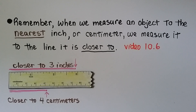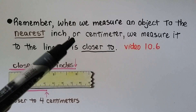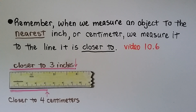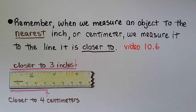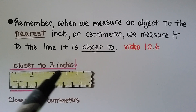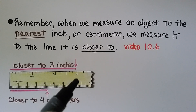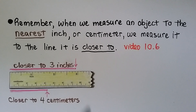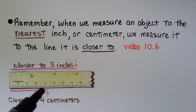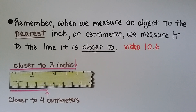Remember, when we measure an object to the nearest inch or centimeter, we measure it to the line it is closer to — we learned about that in video 10.6, linked in the description. This pink line is not at the 3-inch mark, but it's closer to 3 inches, so the nearest inch is 3. For this pink line, it's a little past 4 centimeters, so the nearest centimeter is 4. When measuring to the nearest inch or centimeter, we go to the line it is closer to.